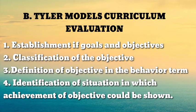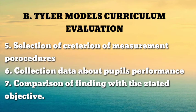Next is Tyler's model of curriculum evaluation. Ralph Tyler proposed seven steps: first, establishment of goals and objectives; second, classification of the objectives; third, definition of the objectives in behavioral terms; fourth, identification of situations in which achievement of objectives could be shown; fifth, selection of criterion measurement procedure; sixth, collection of data about pupils; and seventh, comparison of findings with the stated objectives. These seven stages lead to revision of objectives, making this a cyclical type model.